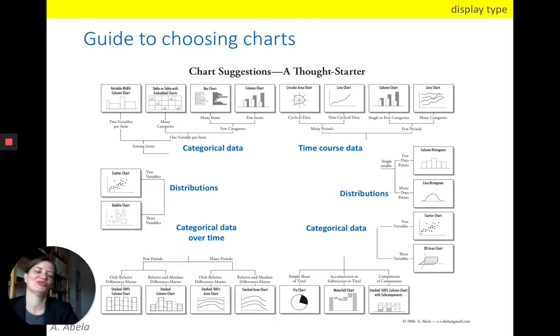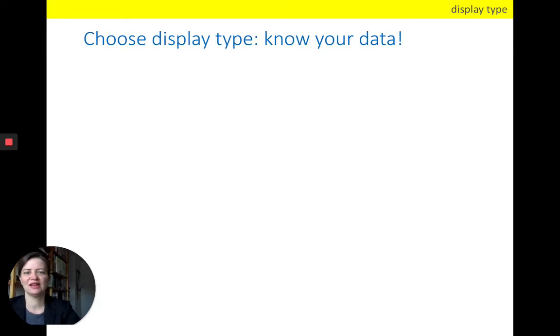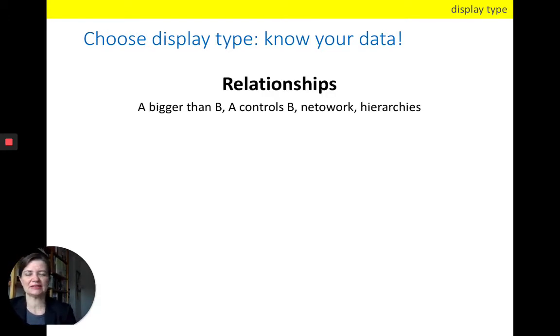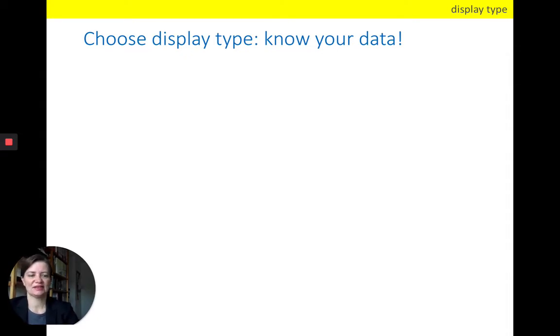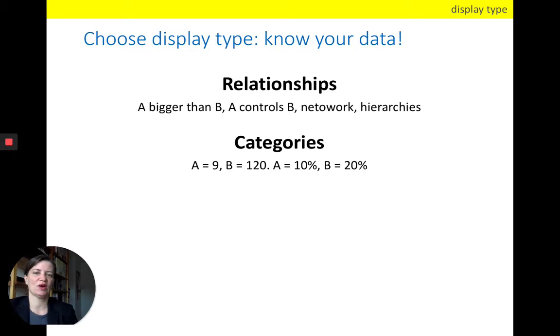Depending on your need, we will now go through the four what I've considered to be the main categories of visualization types that you will need during a PhD, for example. So the first one is relationships, if you want to say A is bigger than B, or A controls B, or if you have a network or hierarchies. The second most common one is that you have categorical data, so for example you have a bin called A and a bin called B, and you simply observe how many items fall into category A and how many items fall into category B. That also applies for percentages.